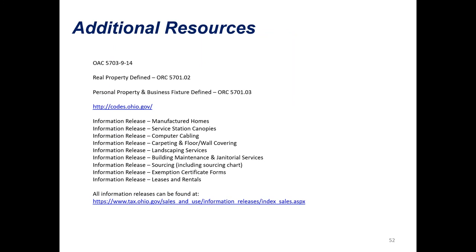That pretty much wraps up our session for today. For additional information, the contractor rule is Ohio Administrative Code 5703-914—everything in that rule deals with construction contractors. We also have the real property definitions with citations listed there, along with some information releases that apply to contractors—I'd encourage you to go out and read these. There's a link at the bottom where you can find those information releases.